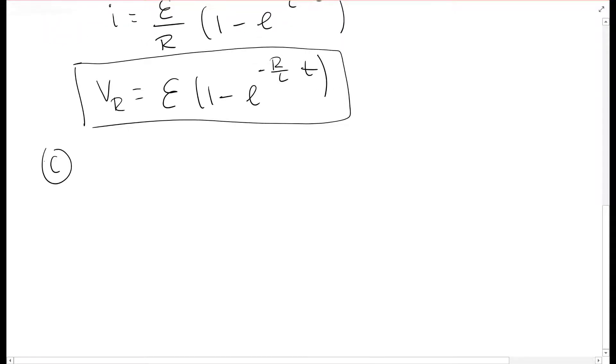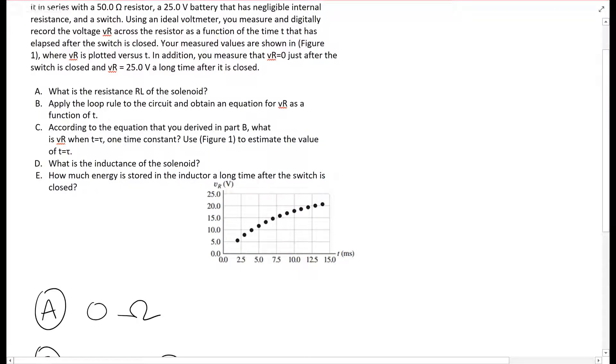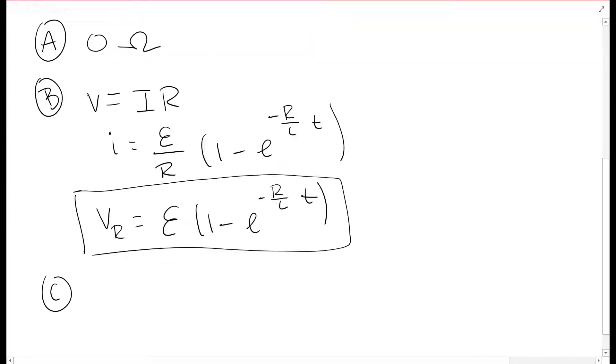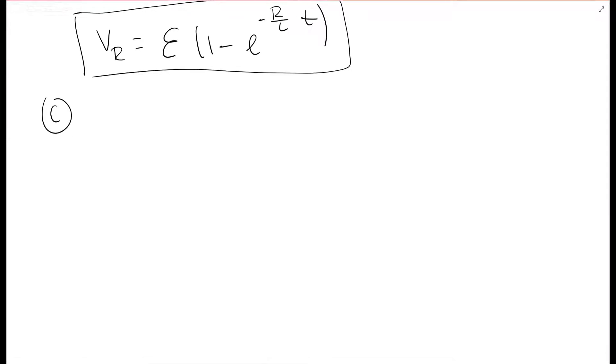Let's get C. C is now asking to use that equation you just found, but when it's at one time constant, and find what is the new Vr equation. So the time constant, Tau, is L over R. So we're gonna go ahead and plug that in for our T. So we're finding our T equals Tau.